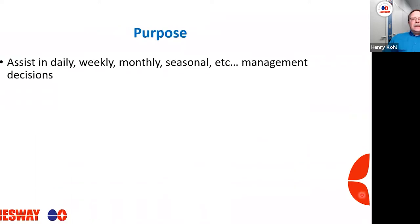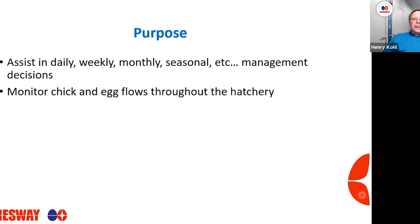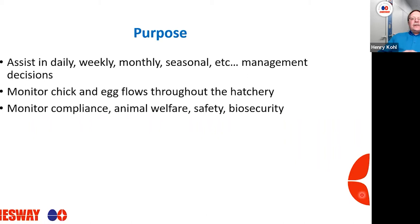The purpose of our data is first to assist us in daily, weekly, monthly, and seasonal management decisions. For example, every summer in North America it gets hot and humid — do you run into a moisture loss issue? If you're collecting this data, you can see seasonal impacts on moisture loss. We also need to monitor chick and egg flows throughout the hatchery, and use data to monitor all aspects of compliance, animal welfare, safety, and biosecurity.